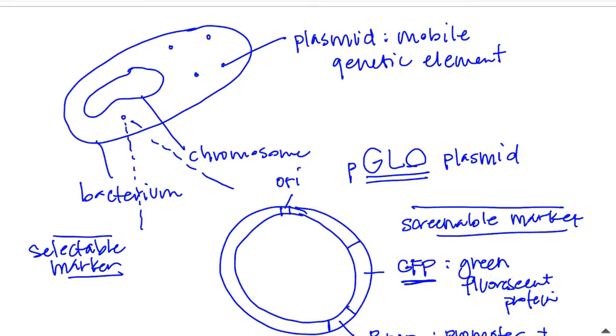So now what the promoter controls is it turns on and off green fluorescent protein. So if arabinose is in the environment, the cell will produce green fluorescent protein and it will fluoresce green. But if there is no arabinose, then the operon is going to turn off. So it's an inducible operon that's been stripped of its structural genes and GFP is there instead. So we call that a screenable marker because when cells have taken up this engineered plasmid, you can screen for it. You can see it because it turns bright green.